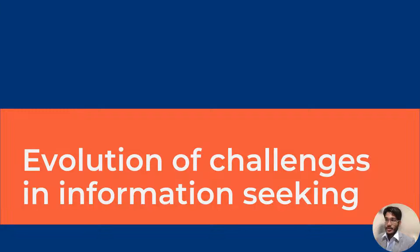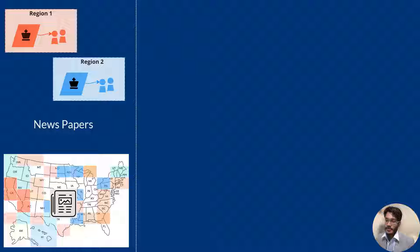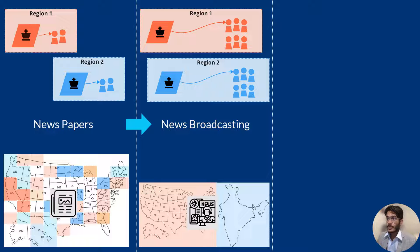Echo chambers have been a big challenge in information systems, and they evolve as technology evolves. Initially, we had newspapers — a huge milestone — but they were region-bound with a rather limited audience, leading to different views in different regions and a lack of global understanding. The power to shape the narrative was controlled by these local newspaper providers. Next, we had news broadcasting, which had a much broader audience and coverage, but faced the same core challenges: region-based echo chambers and the power of narrative still controlled by the broadcaster.